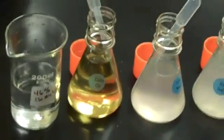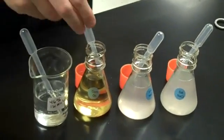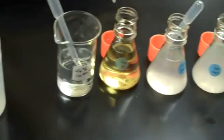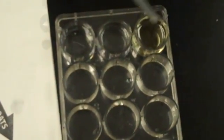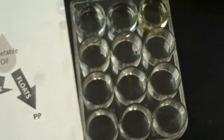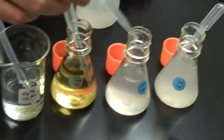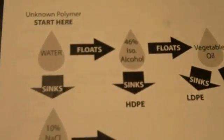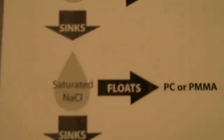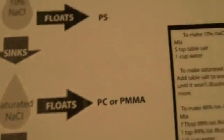We're going to put that right here. Notice how I have a different pipette in each one of my substances — this is so we don't contaminate one substance with another. And then we have vegetable oil, and then 10% sodium chloride, which we'll put right here, and then saturated sodium chloride, which we're going to put right under there.